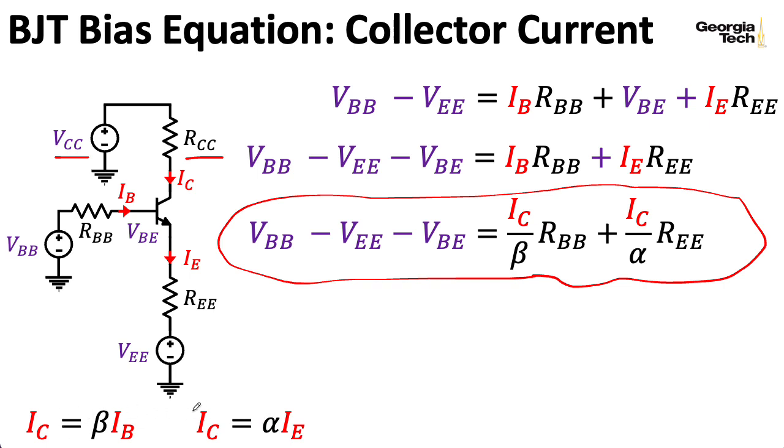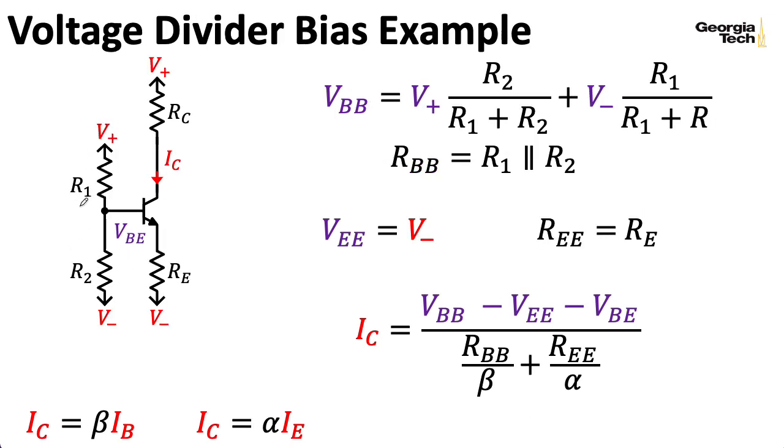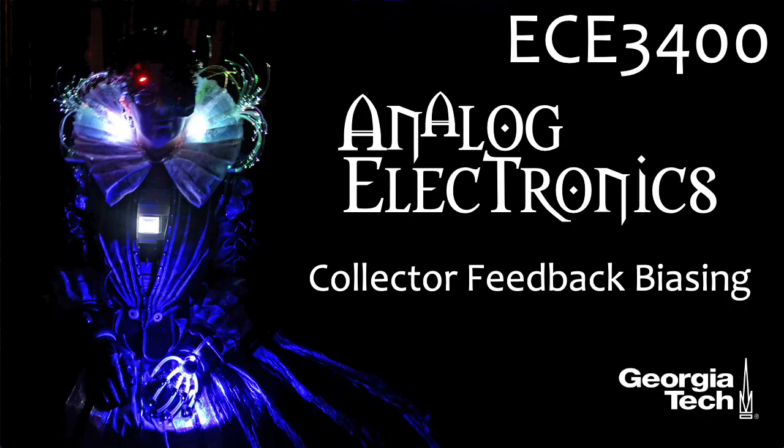Using the expressions of those Thevenin voltages and Thevenin resistances, we came up with something that we call the BJT bias equation that you could solve for the collector current. Then you could use these other relationships to compute the base current or the emitter current as needed. And in this lecture, we're going to look at another strategy that's a bit more complicated to analyze called collector feedback biasing.